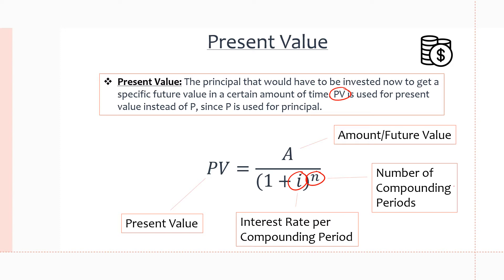We have (1 + i) in brackets to the power of N, which is our number of compounding periods. We want to make sure we get N right — it's the number of years times the type of compounding period. So if it's quarterly we multiply by four, if it's semi-annually we multiply by two, and if it's annually we multiply by one.